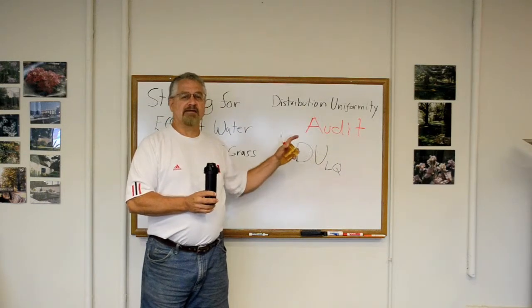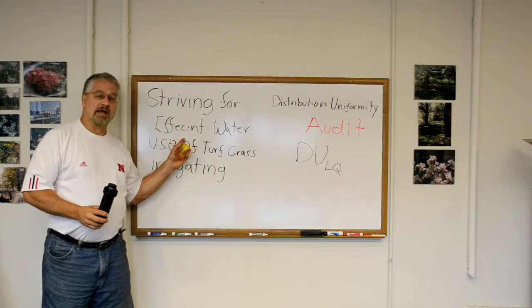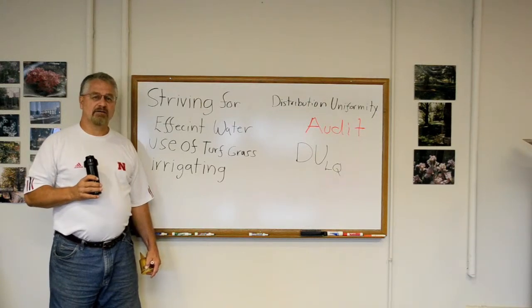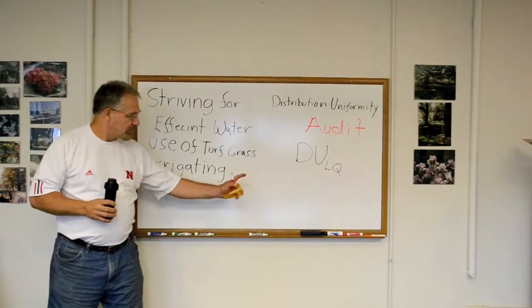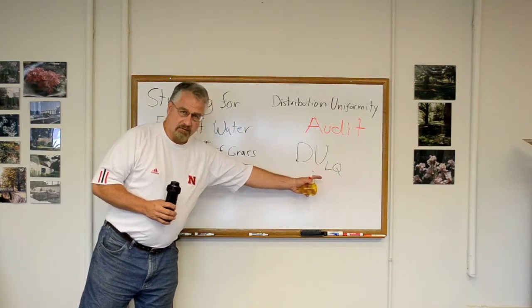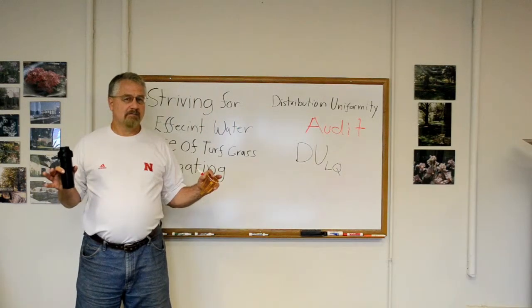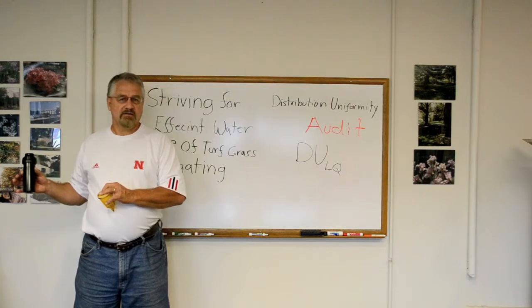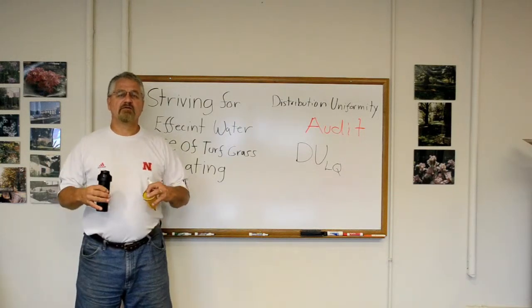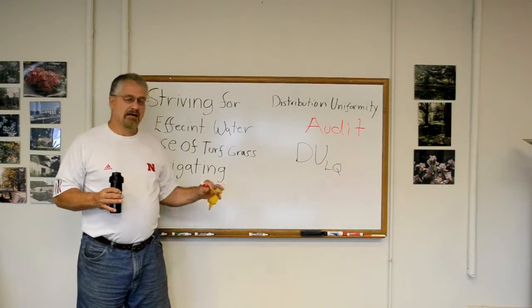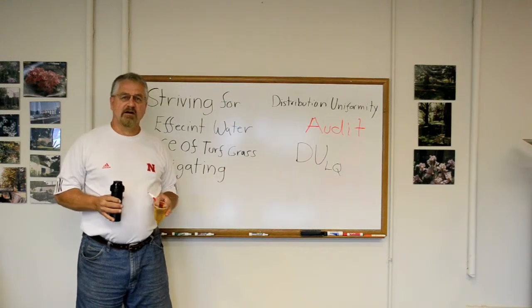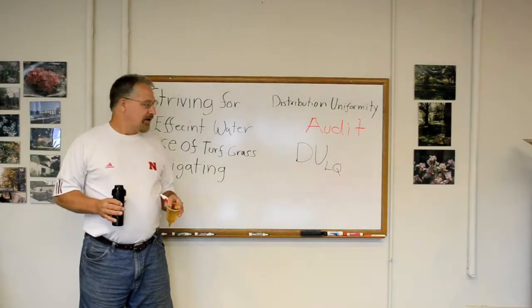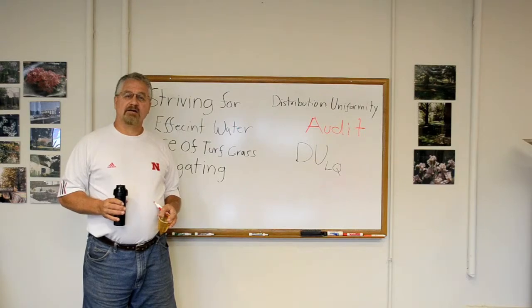I might mention right now that these procedures that I'm showing you, the distribution uniformity low quarter, what we use, may not be the same thing that the University of Nebraska Agricultural Department uses. So a little disclaimer here. This is what the turf grass irrigation, what we use for a guide on how we judge our sprinkler system. So all fairness due to what they may have. Anyway, let's keep going. Go out in the field and go to it.